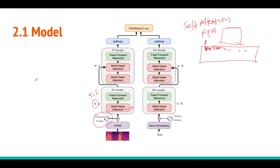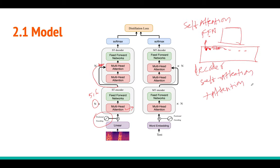The decoder also has self-attention, but additionally it has attention from the encoder side. From the last layer of the encoder you get input that the decoder must also attend to. So the decoder has two attentions: self-attention (attending to its own previous outputs) and encoder-decoder attention (attending to the encoder outputs). You can stack multiple decoder blocks and finally apply softmax to predict the output sequence of labels.